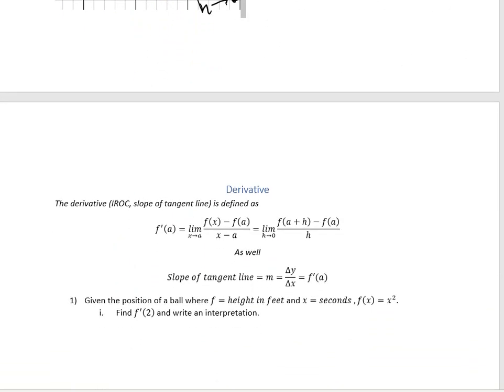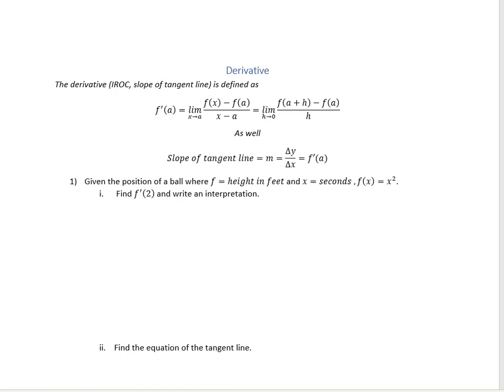Let's look at the definition. The derivative — also known as the instantaneous rate of change, also known as the slope of the tangent line — can be defined either way: f(x) minus f(a) divided by x minus a as x approaches a, or f(a+h) minus f(a) divided by h as h goes to 0. Also, the slope of the tangent line equals m, which is delta y over delta x — the change in y over the change in x. In science and physics, delta refers to a change of something. Another way you might see this written is dy over dx, because delta is the Greek letter for d.